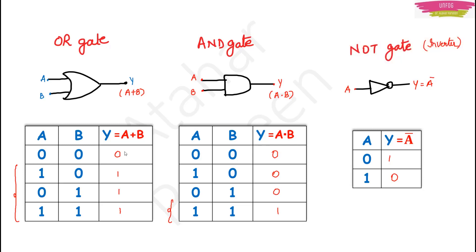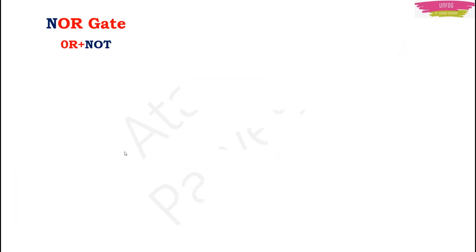Keeping these three gates in mind, you can combine OR gate and NOT gate to make one more gate, or you can combine AND gate and NOT gate to make another gate. OR gate with NOT gate gives you the NOR gate, and AND gate with NOT gate gives you the NAND gate. For the NOR gate — you are giving the OR gate output as input of the NOT gate. This is the symbol for the NOR gate.